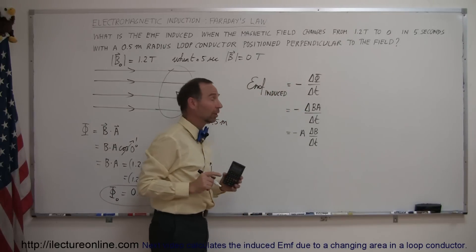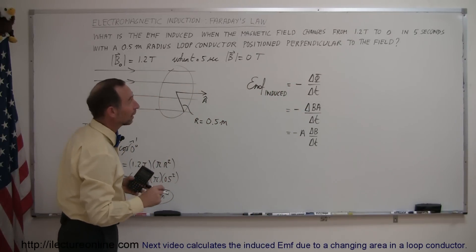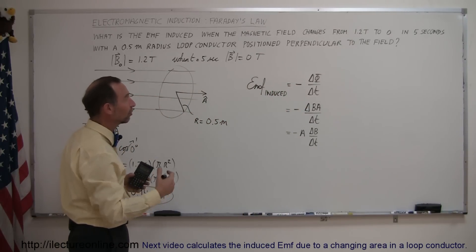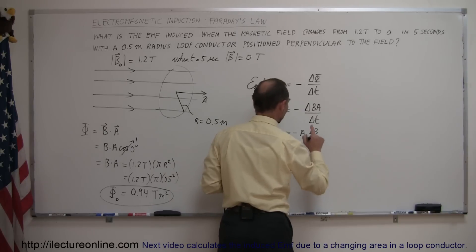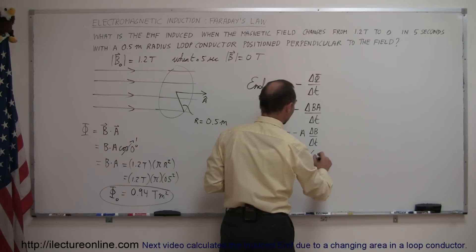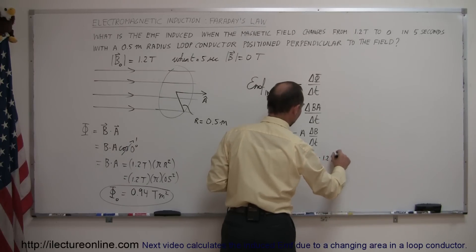so this is equal to minus A times a change in the B field over time. And that we know is changing, because the B field goes from 1.2 initially to 0 finally, so this can be written as minus A times a change in the B field, which is from final to initial, that 0 minus 1.2 tesla divided by the time elapsed, which is 5 seconds.